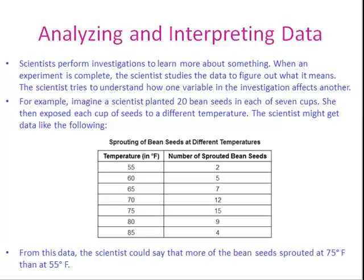Scientists perform investigations to learn more about something. When an experiment is complete, the scientist studies the data to figure out what it means. The scientist tries to understand how one variable in the investigation affects another. For example, imagine a scientist planted 20 bean seeds in each of seven cups. She then exposed each cup of seeds to a different temperature. From this data, the scientist could say that more of the bean seeds sprouted at 75 degrees Fahrenheit than at 55 degrees Fahrenheit.